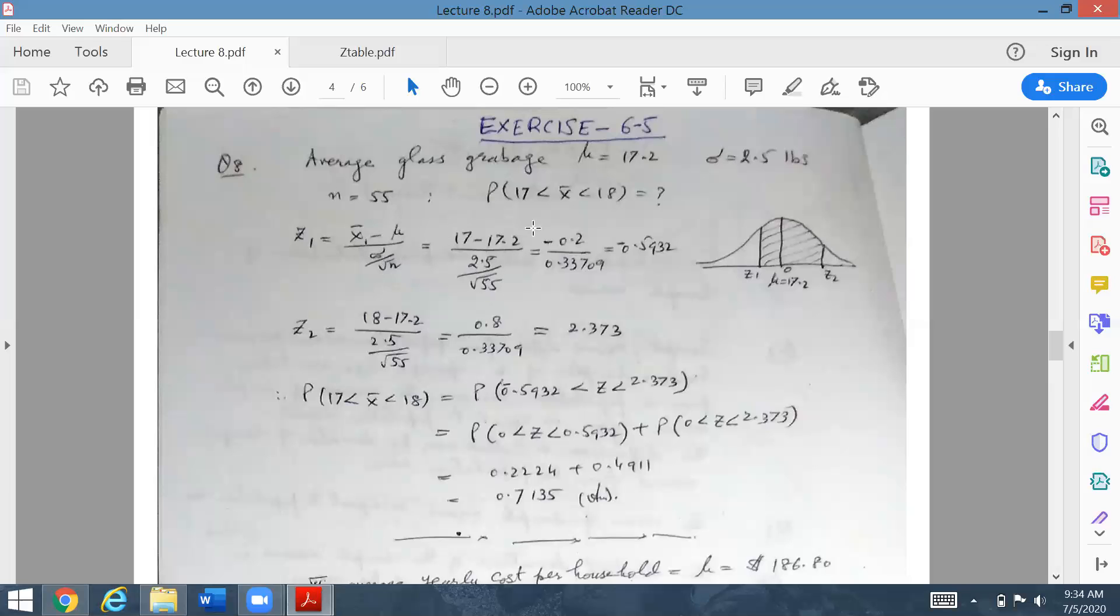Just simplify step by step. Minus 0.2 divided by this gives the answer minus 0.59. This is the value of z1. Similarly you calculate z2. The formula is the same. Instead of x1, now you are going to use x2, which is 18. The remaining values are the same. The z2 value is 2.373 because the denominator is the same.